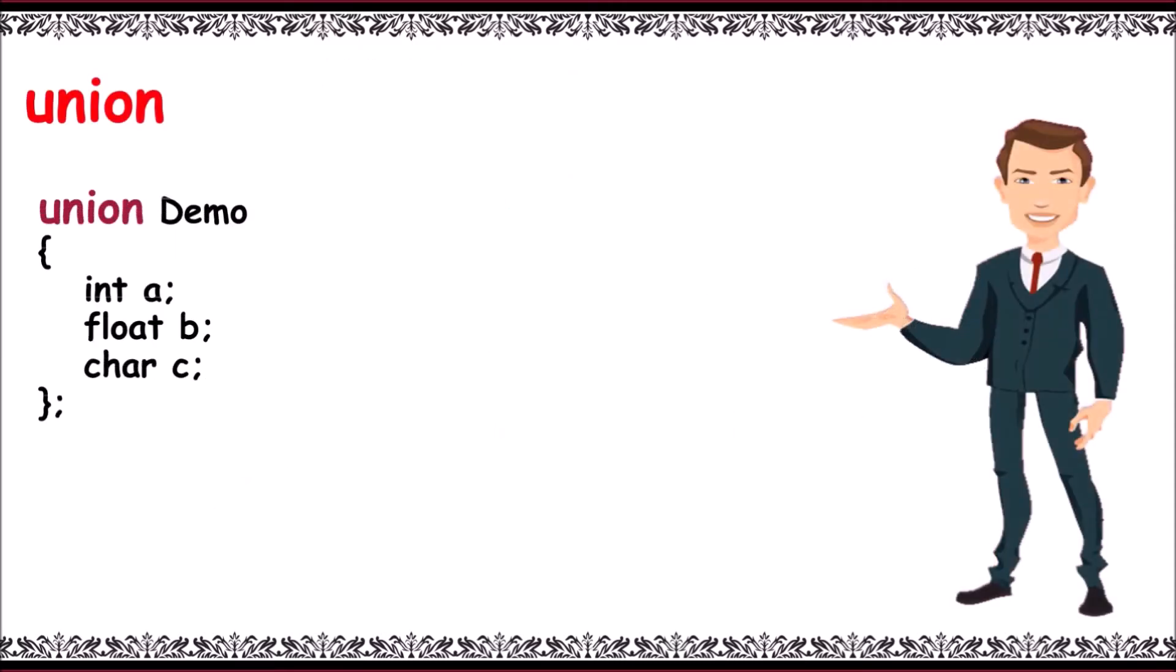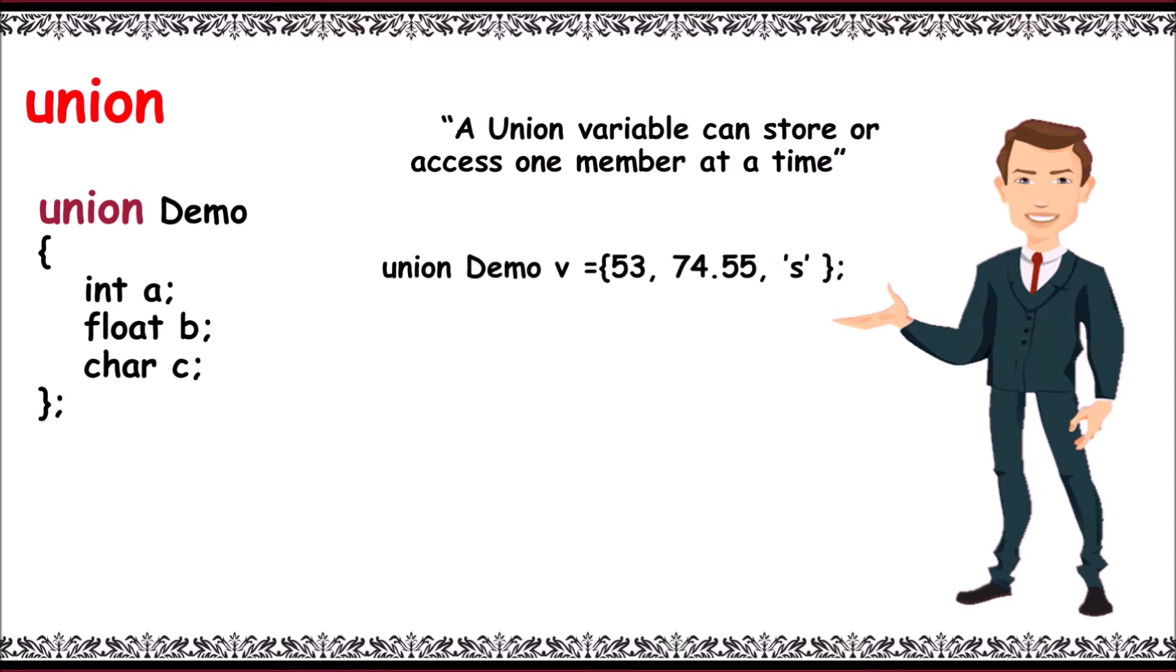A union variable can store or access one member at a time. Now let me try to initialize all at once, like union demo v equals 53, 74.55, 's'. As it cannot store all at a time, this is invalid. I repeat, invalid.